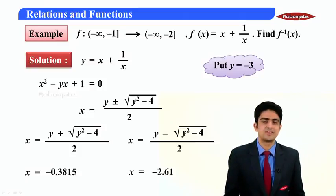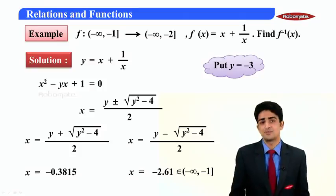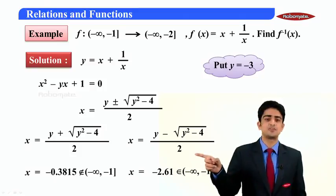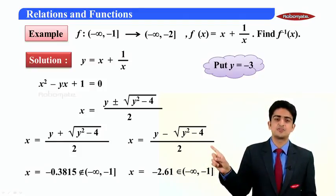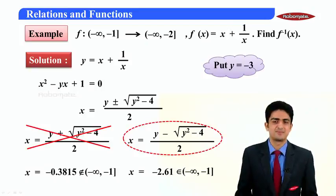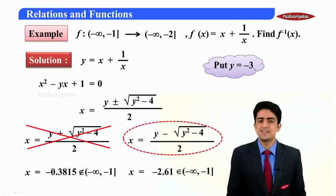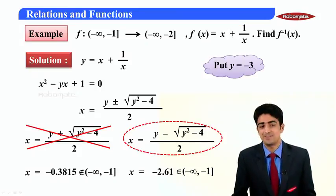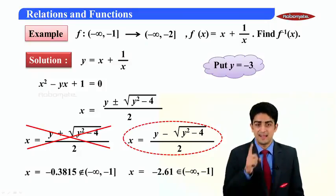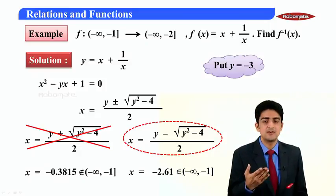Now this belongs to (-∞,-1] whereas this does not belong, so that expression should be wrong and this expression should be right. So this is wrong and this is my inverse, so f⁻¹(x) is (x - √(x²-4))/2. Basically in this case we learnt two things: number one, f⁻¹ is unique; number two, if we need to check which one is correct, use that f⁻¹ will be from B to A.